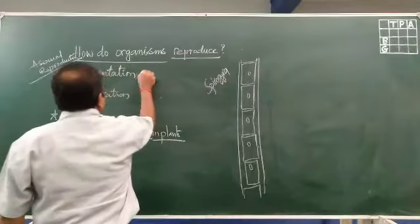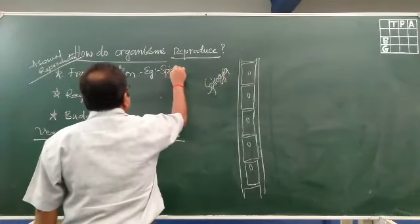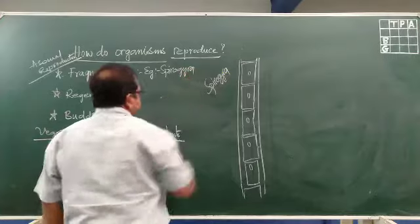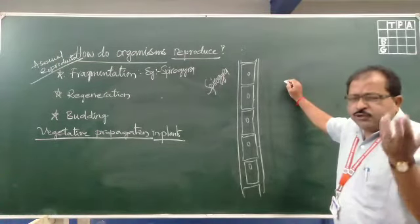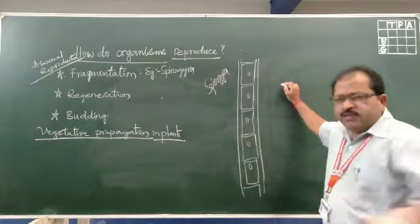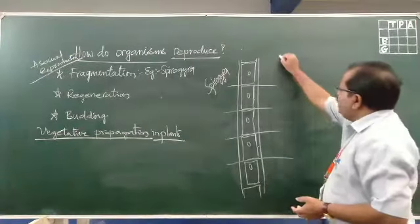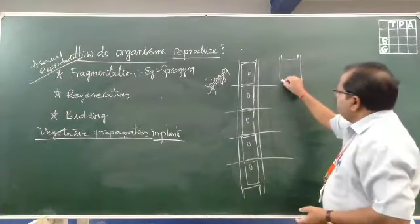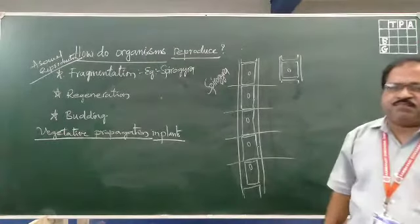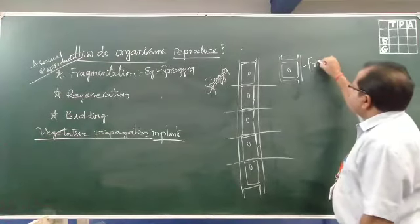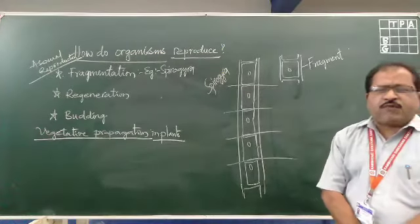The example for fragmentation is spirogyra. It is an aquatic animal — that means a water animal. Due to the water current, that means movement of the water, it may be cut into pieces, and each piece will be living as an individual organism. The cut piece is called a fragment, and this process is called the fragmentation process.